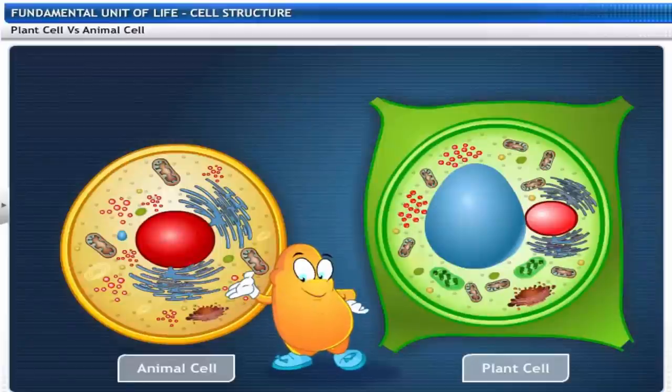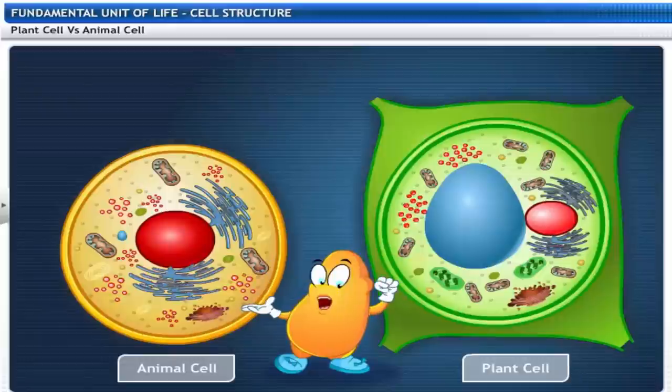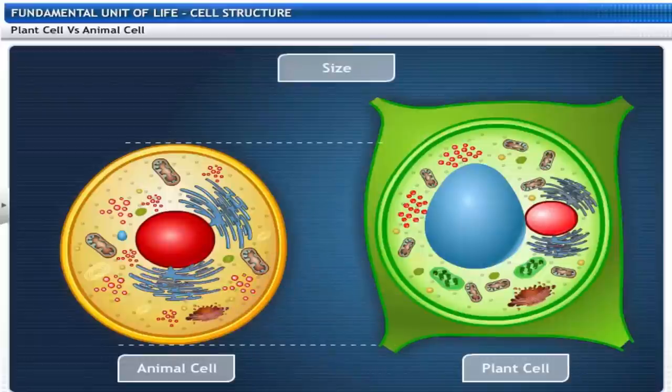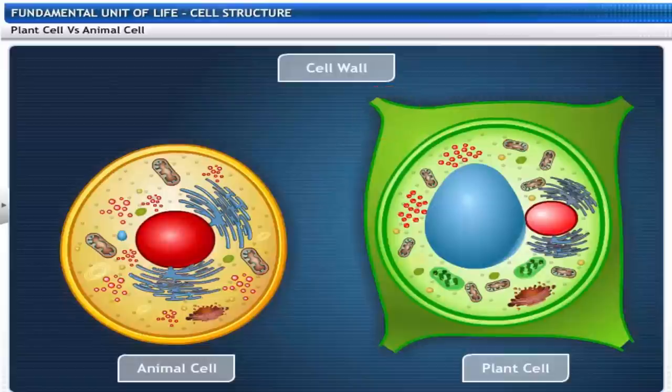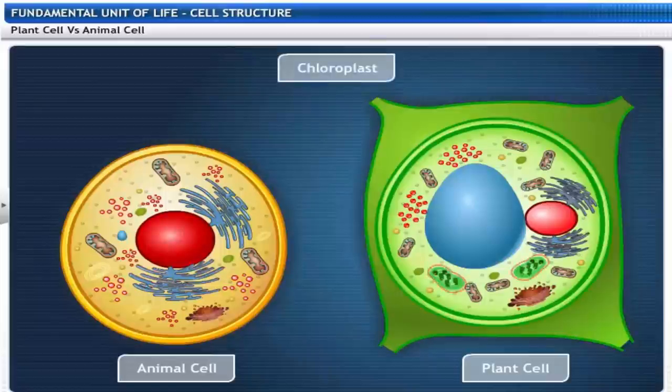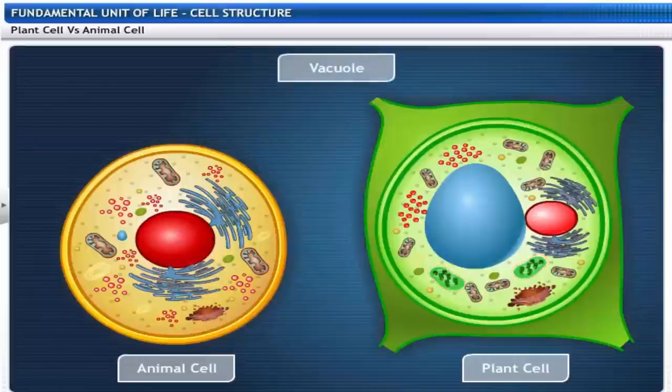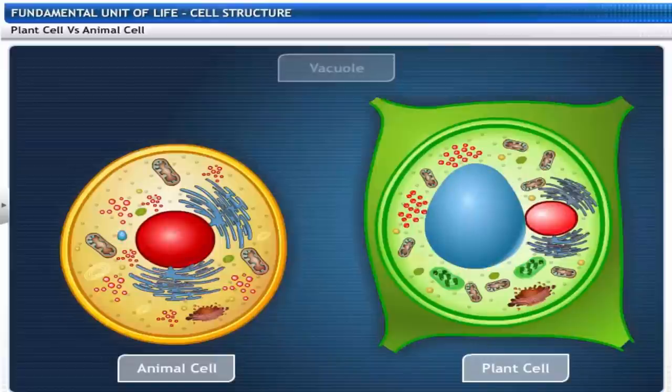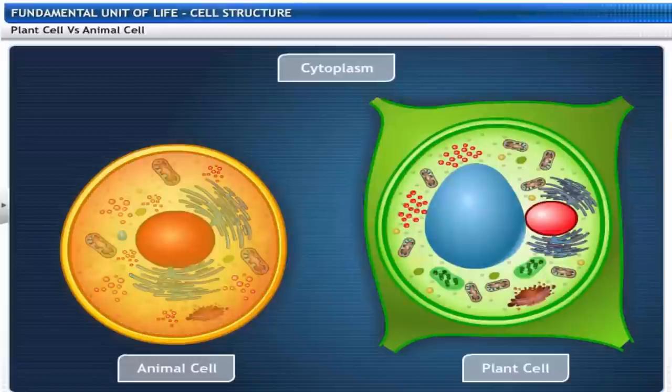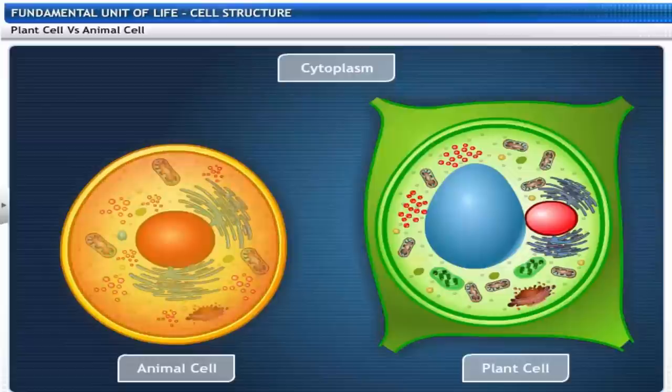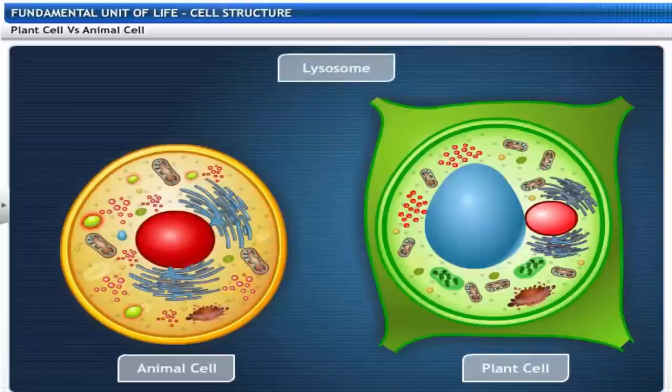Here is the animal cell and the plant cell. See if you can spot the differences between them. Plant cells are larger in size compared to animal cells. Plant cells have a cell wall but animal cells do not. Plant cells have chloroplasts but animal cells do not. Plant cells usually have a large vacuole while animal cells have small vacuoles if present. The cytoplasm of plant cells is pushed to the periphery by the large vacuole. In animal cells the cytoplasm is dense and fills the entire cell. Plant cells have fewer or no lysosomes compared to animal cells.